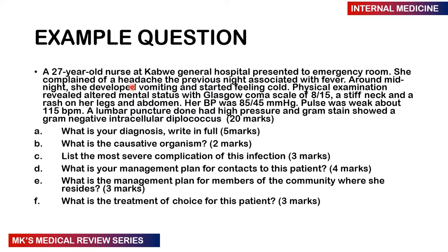Here's our example question. A 27-year-old nurse at Cowboy General Hospital presented to the emergency room. She complained of a headache the previous night associated with fever. Around midnight she developed vomiting and started feeling cold. Physical examination revealed altered mental status with a Glasgow Coma Scale of 8 out of 15, a stiff neck, and a rash on her legs and abdomen. Her BP was 85 over 45 mmHg. Pulse was weak at about 115 beats per minute. A lumbar puncture was done with high pressure, and gram stain showed a gram-negative intracellular diplococcus. For 20 marks, A: What is your diagnosis? Write in full. 5 marks.